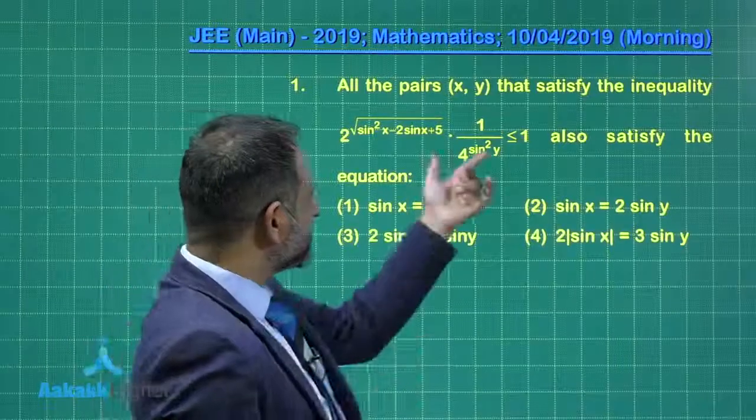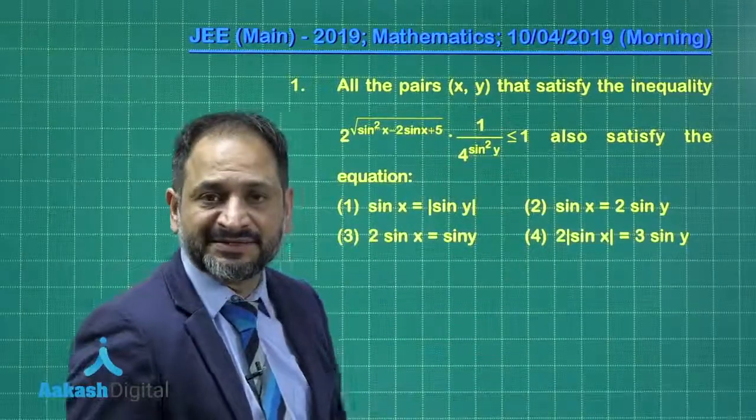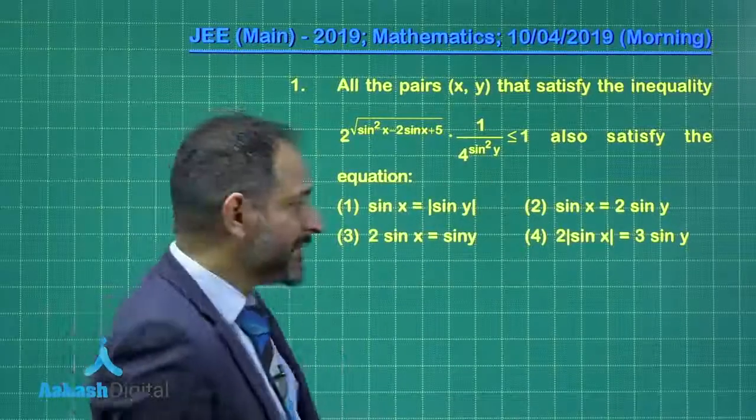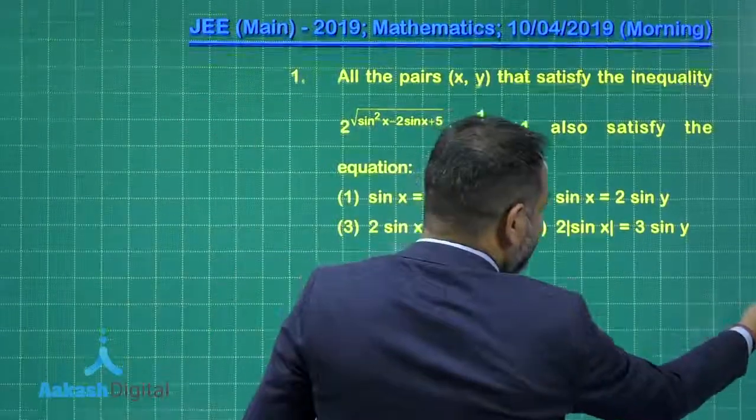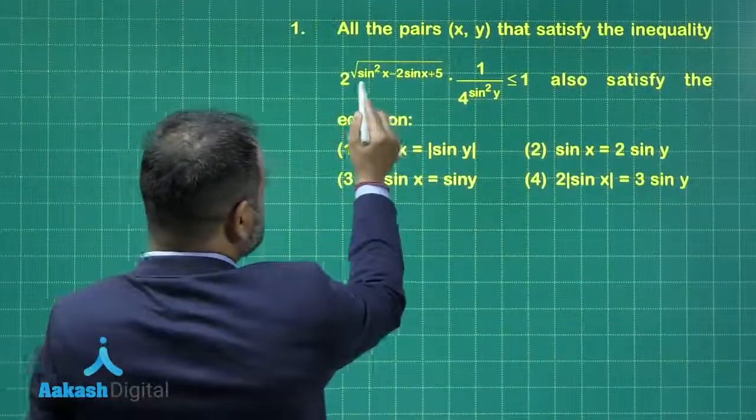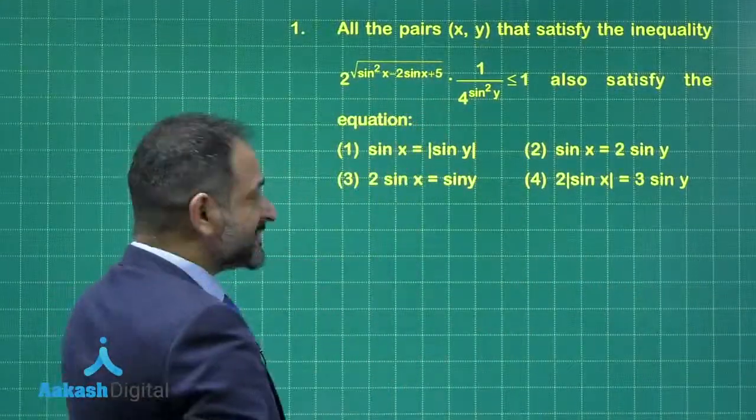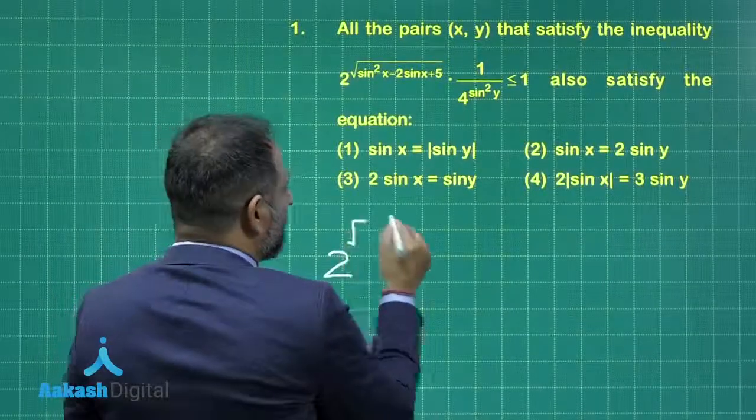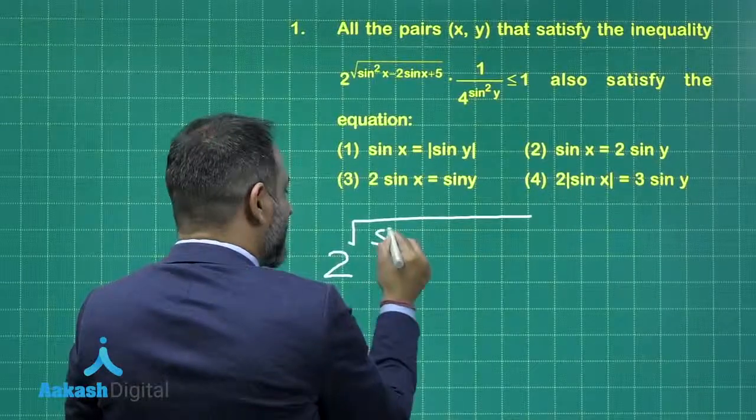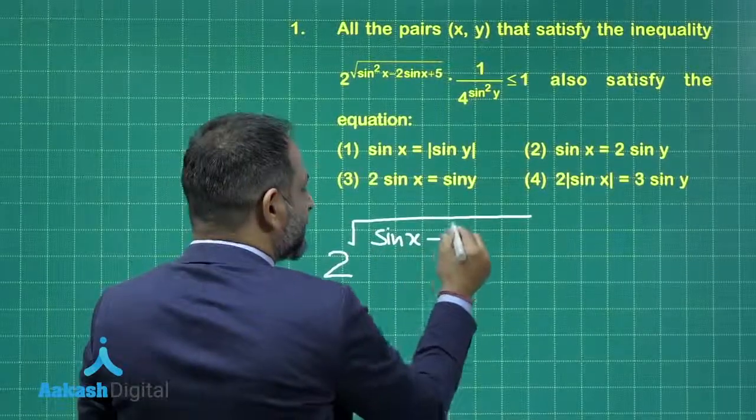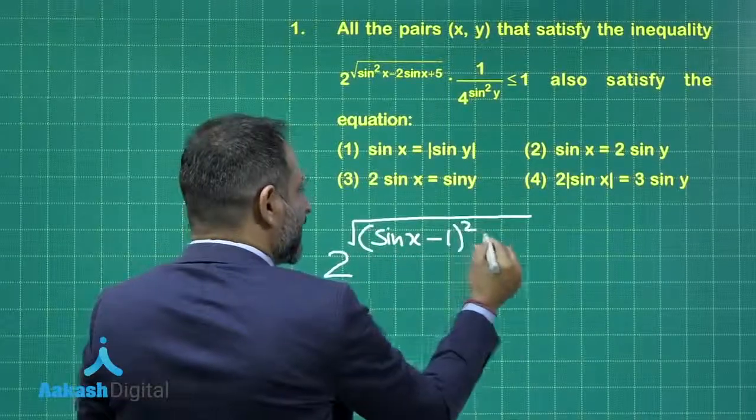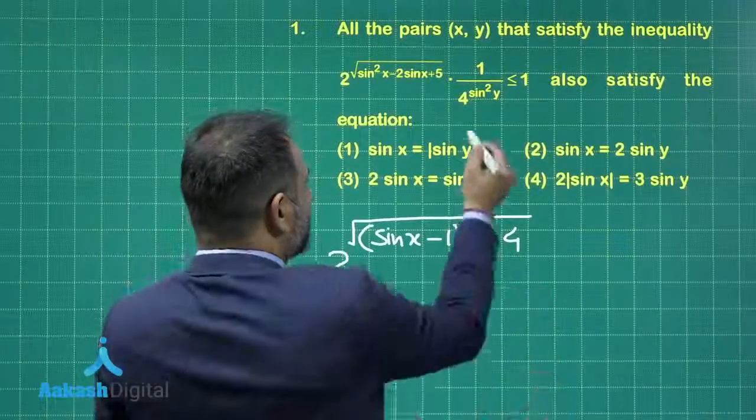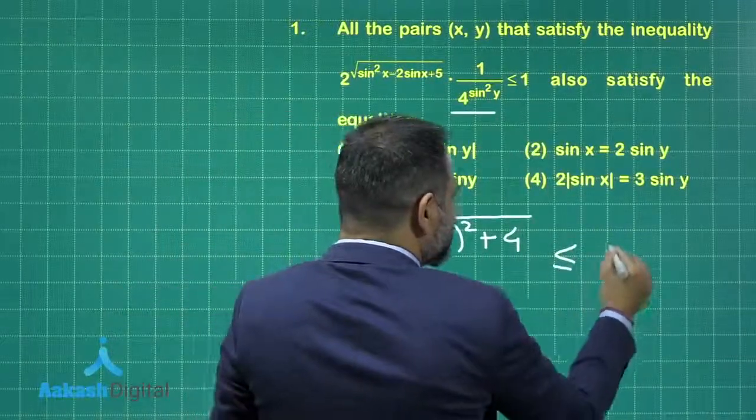I am taking this term to the right hand side, and this can be easily done because this is positive. Positive terms can be cross multiplied. You can notice this term will be completing into the whole square. So our first step is 2 raised to the power under root sin x minus 1 whole square plus 4.